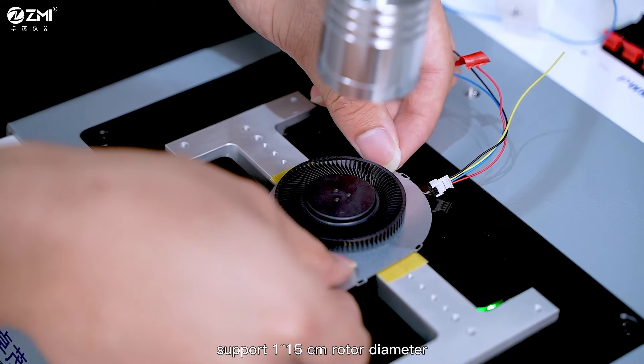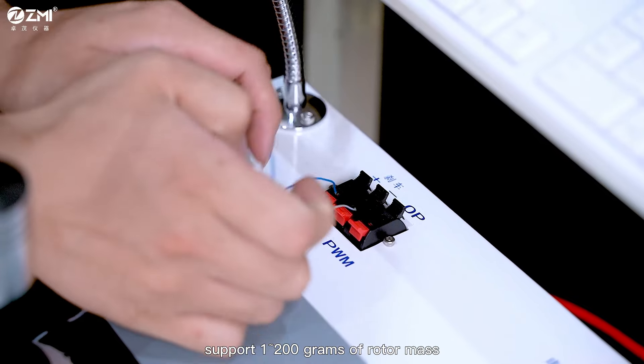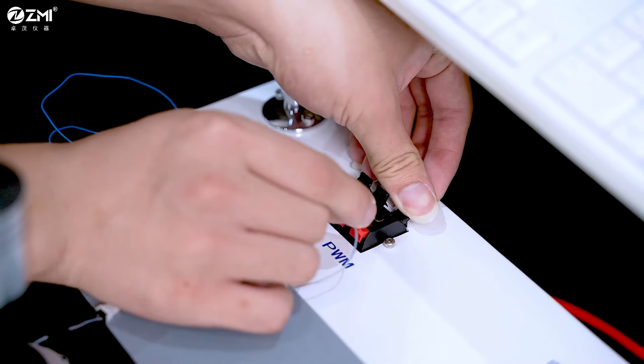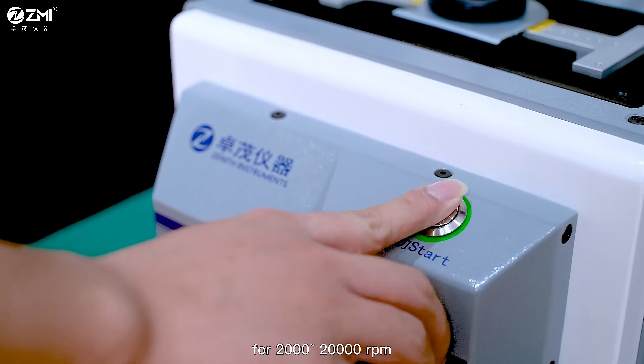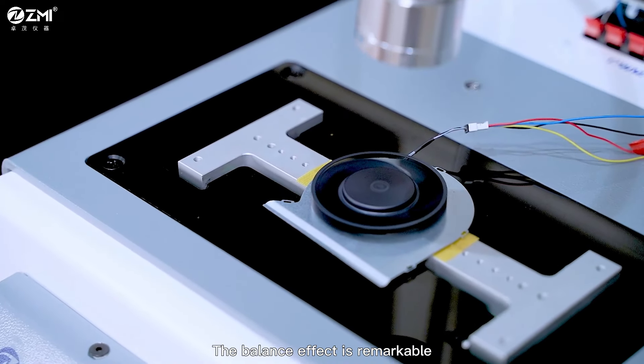Wide detection range: support 1-15 cm rotor diameter, support 1-200 g of rotor mass, for 2,000-20,000 rpm balanced rotor speed range to provide detection.